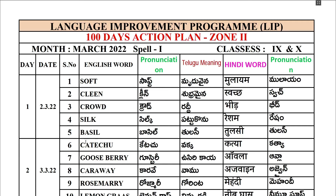5th one: Basil, B-A-S-I-L. Basil. Telugu: Tulasi. Hindi: Tulsi.